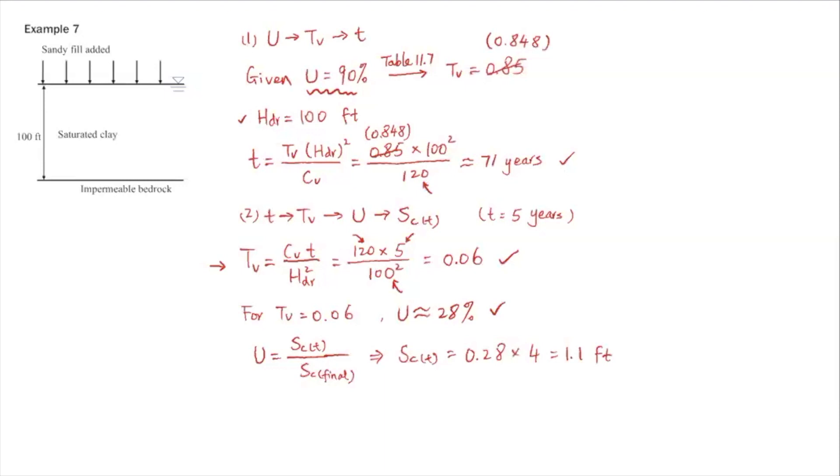So that's the degree of consolidation: 28 percent. Then the settlement at this time, we use the definition of U, which is sc at small t over sc final, and sc final we know is 4 feet.